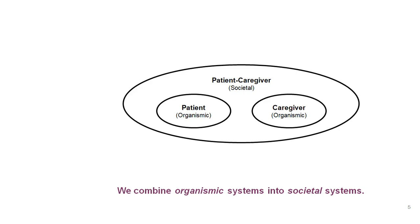Another thing we do in system diagramming is take bubbles that represent systems and combine them into larger systems. Here we combine two organismic systems into a societal system. The patient is an organismic system, and their caregiver — a parent, spouse, or good friend — is also an organismic system. Put them together and you get a patient-caregiver pair, which is now a societal system. You can't model a patient-caregiver as though they're a single person, because the modeling constructs will break down.